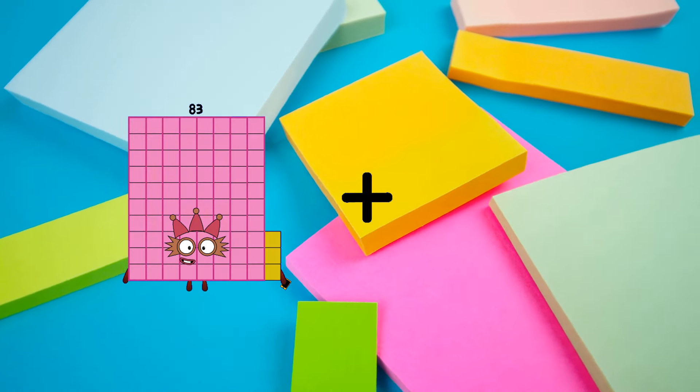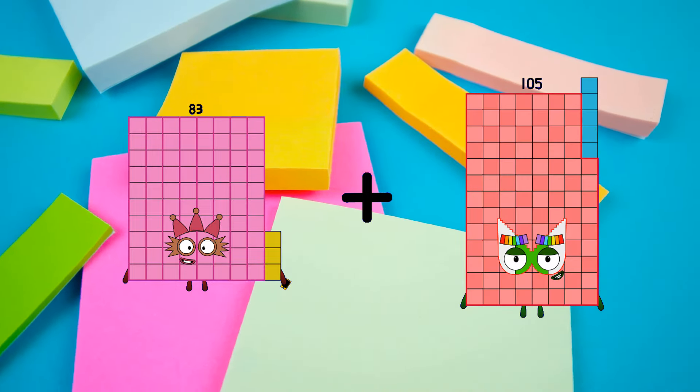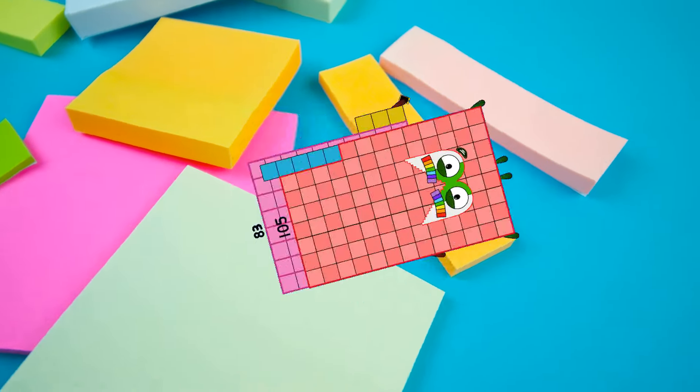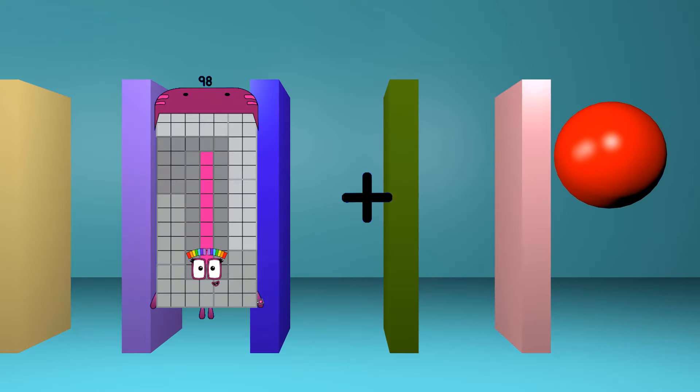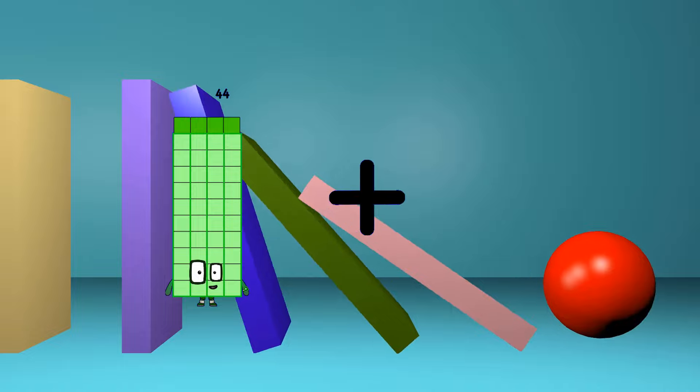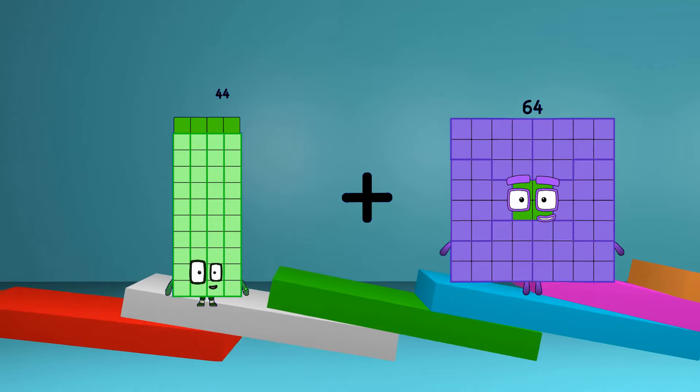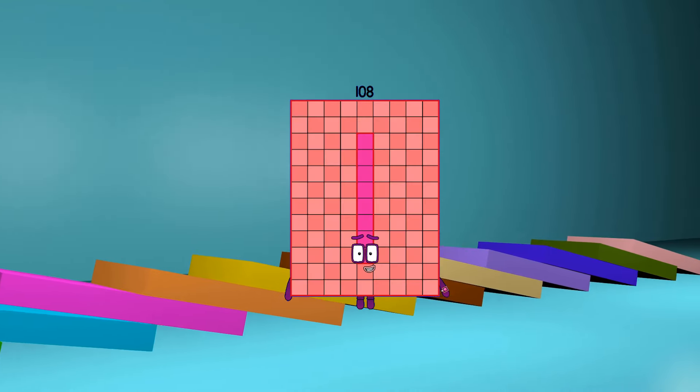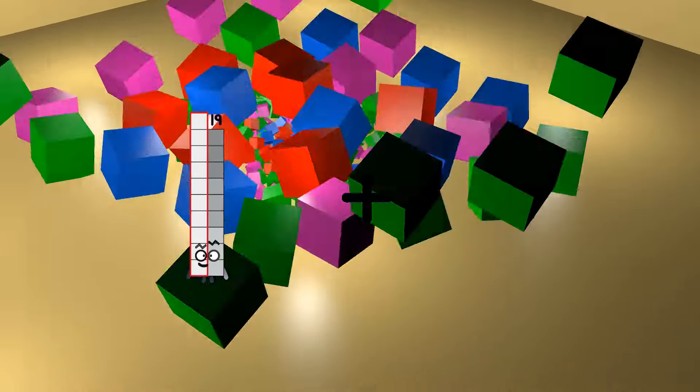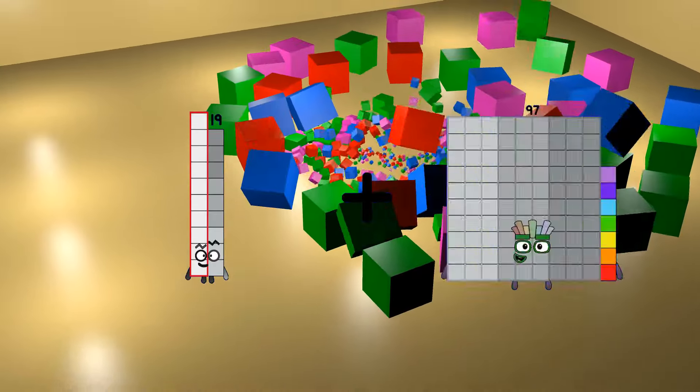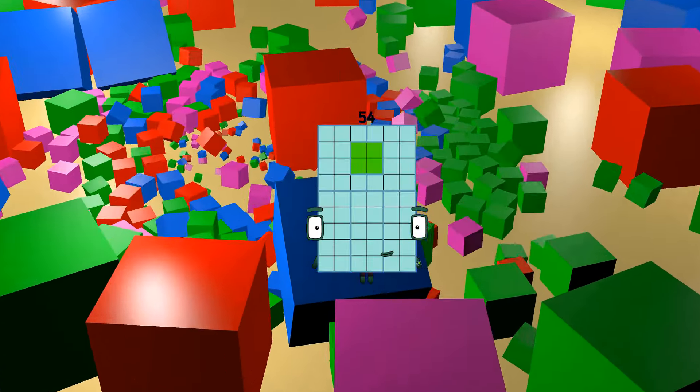83 plus 105 equals 188. 44 plus 64 equals 108. 19 plus 35 equals 54. 97 plus 17 equals 167.